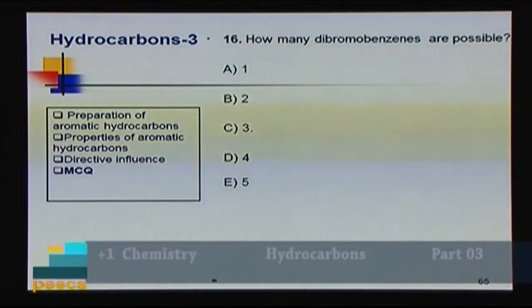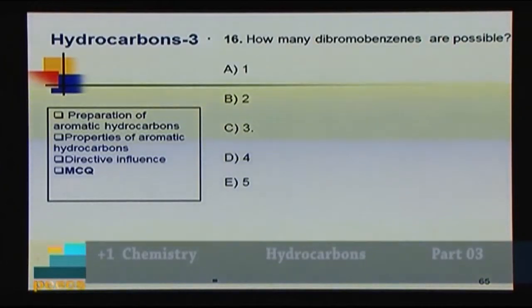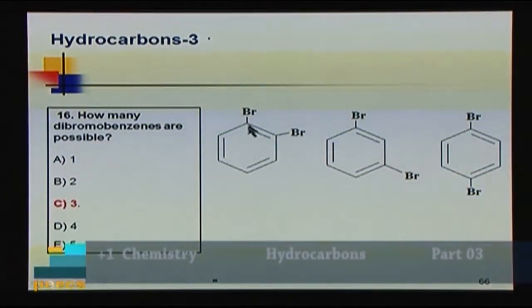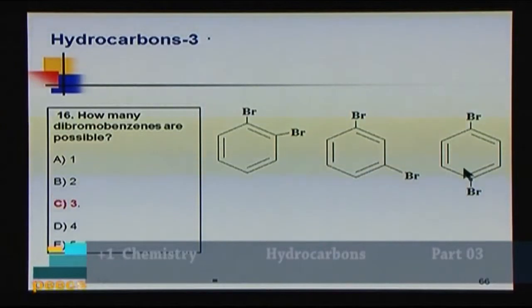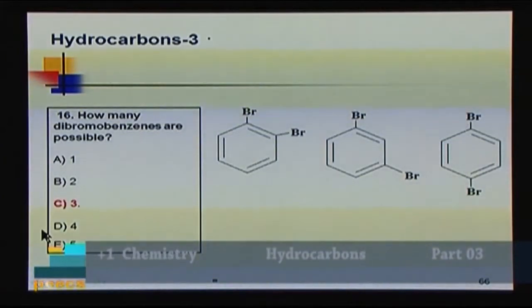Question 16: How many dibromobenzene isomers are possible? A) 1, B) 2, C) 3, D) 4, E) 5. The two bromine atoms can occupy positions 1,2 (ortho-dibromobenzene), 1,3 (meta-dibromobenzene), or 1,4 (para-dibromobenzene). So there are 3 possible isomers. Answer: C.